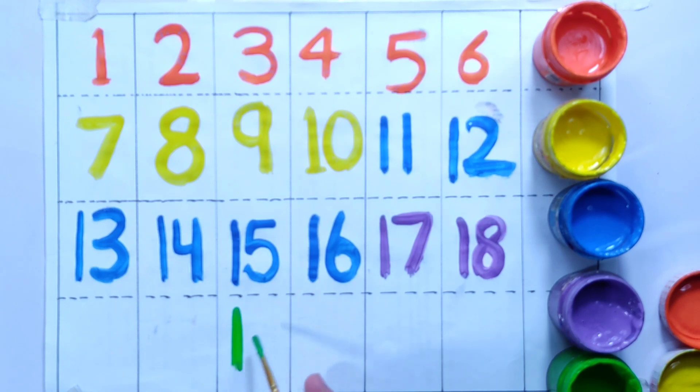Number 19. You can write 19 by writing 1 and 9. The last number is 20.